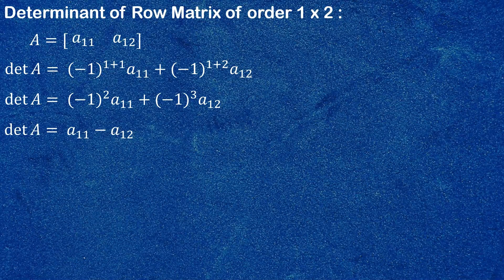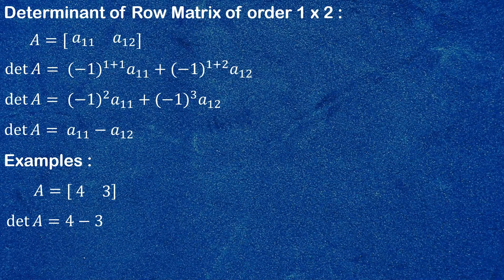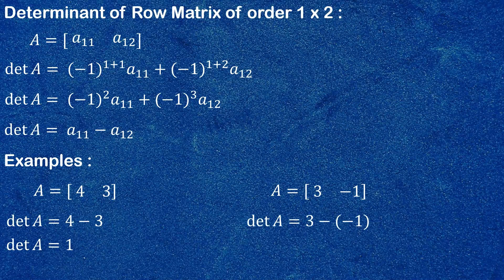Let's elaborate using an example. Take a matrix [4, 3]. Its determinant is 4 − 3 = 1. Let me take one more example: if A = [3, −1], then its determinant is 3 − (−1) = 4.